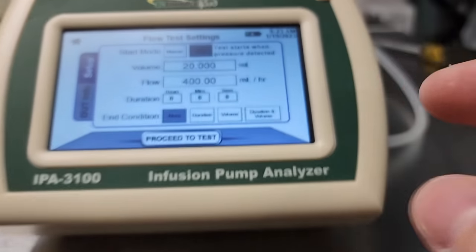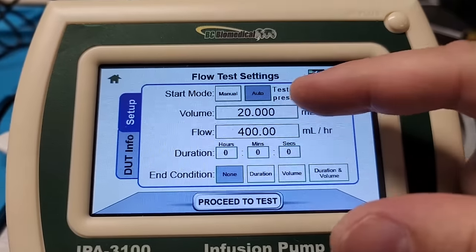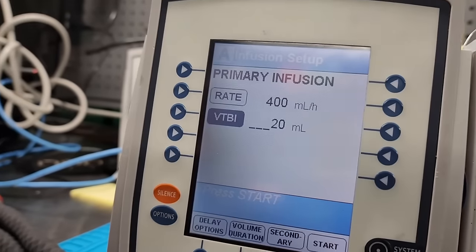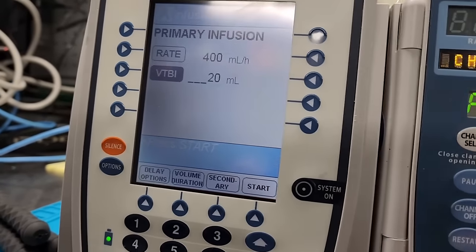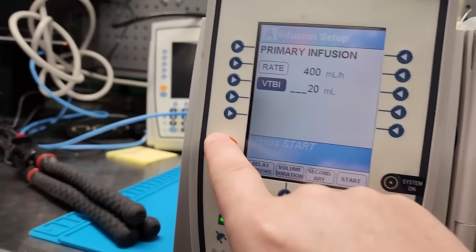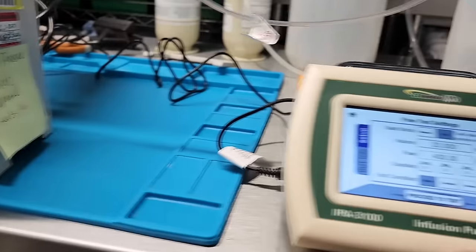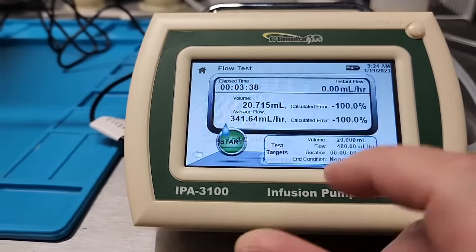Here we go. We are on flow test. It says to run it at 20 milliliters and 400 milliliters per hour. We have 400 milliliters per hour, 20 milliliters, and an alarm of course. So let's go ahead and proceed to the test.